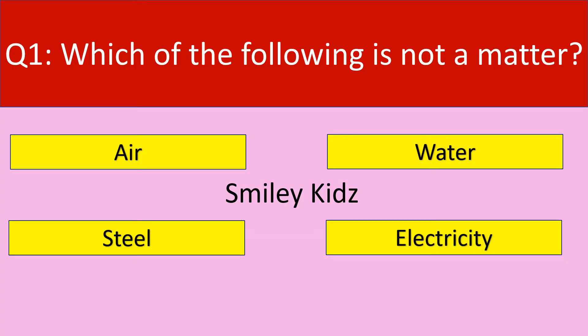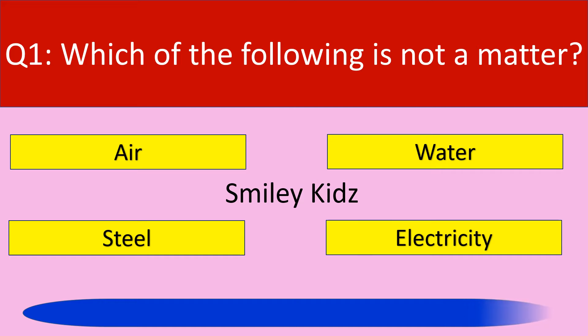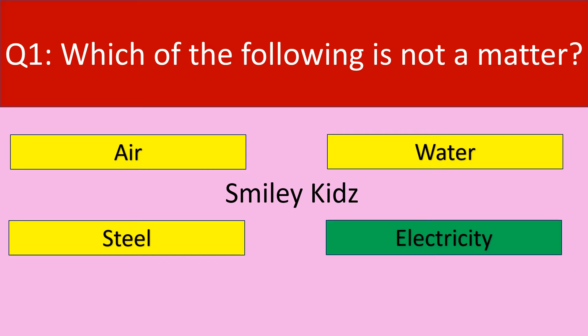Question number one. Which of the following is not a matter? Options are air, water, steel, electricity. Your time starts now. Your time is up. The correct answer is electricity. Electricity is not a matter.